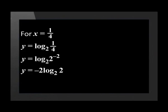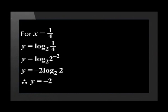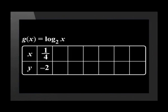Using the exponent's law in logarithms, we can write it as -2·log₂(2). We know that log₂(2) gives us 1. Therefore, y = -2. This means the first coordinate is (1/4, -2).